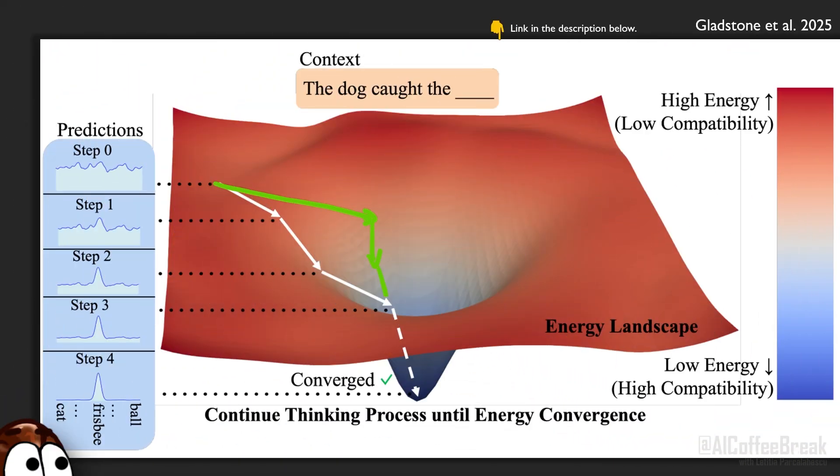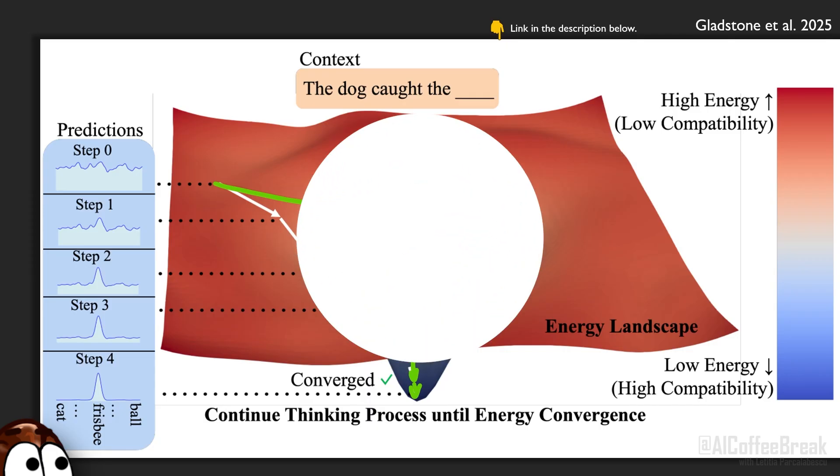Third, randomizing the step sizes. If every gradient descent update has the same fixed step size, the model could learn one very rigid optimization path, which is brittle — if you change the number of steps or the difficulty of the problem, the model might fail. So instead, the authors randomize the step size and the number of steps, forcing the model to cope with different optimization trajectories and making it more robust. Together, these three techniques regularize the energy landscape: noise prevents narrow basins around training data, the replay buffer ensures valleys are well-shaped even midway down, and random step sizes prevent memorizing one descent path.